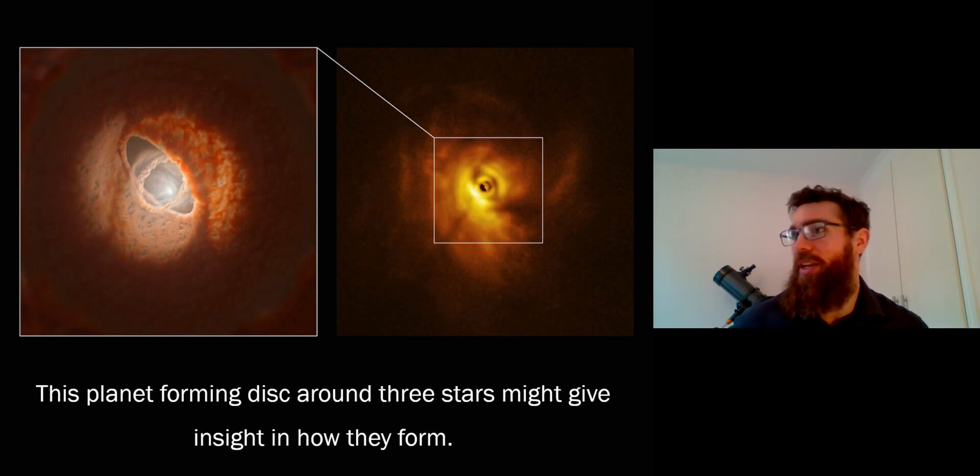Were they captured? Was it a planet that just happened to get too close, had been ejected from its own system and then was captured? But this is an image, so on the right-hand side you've got an image of a disk around a triple star system.